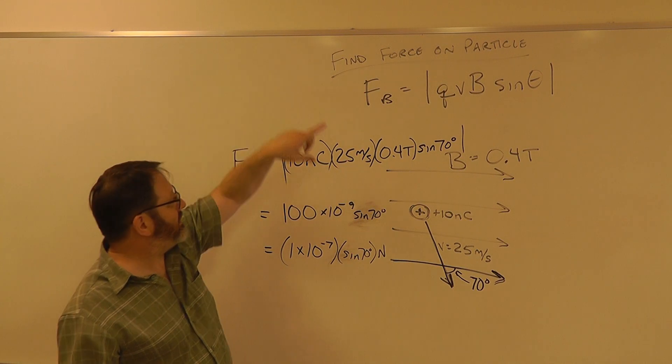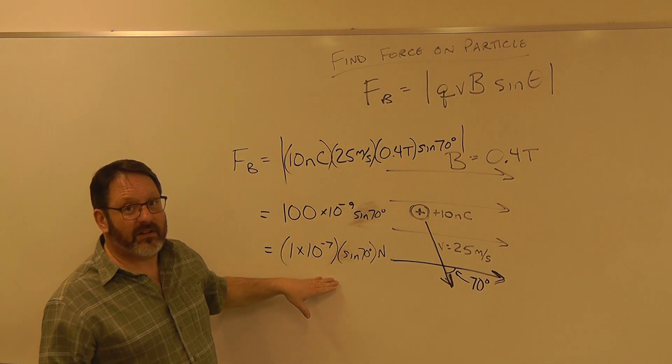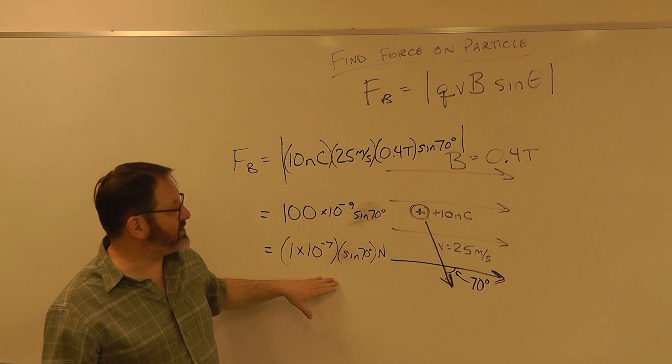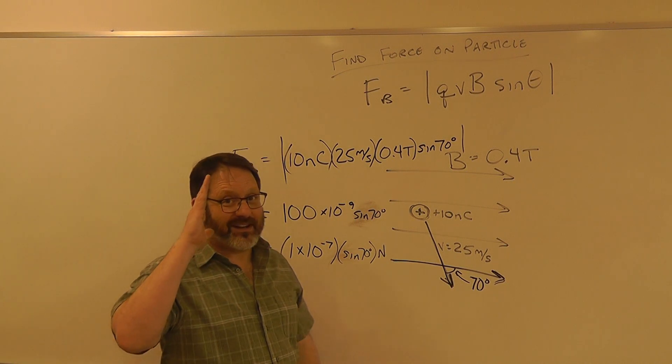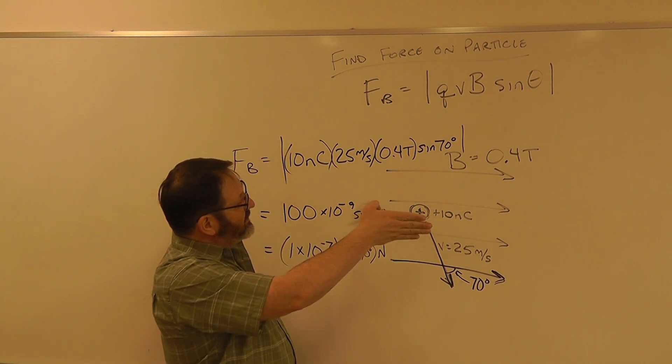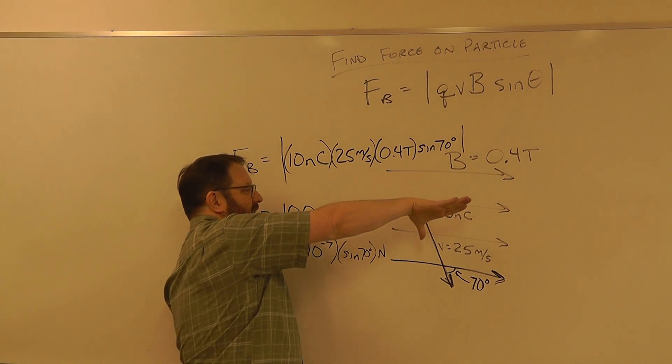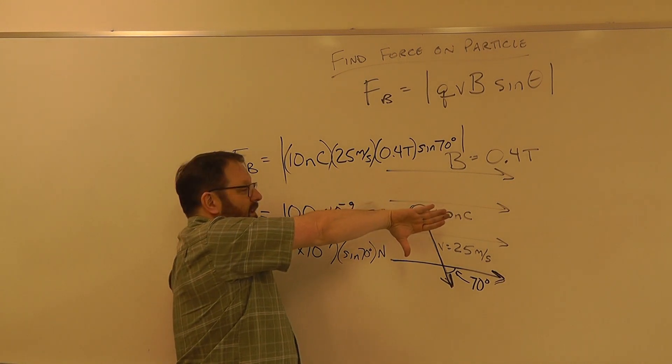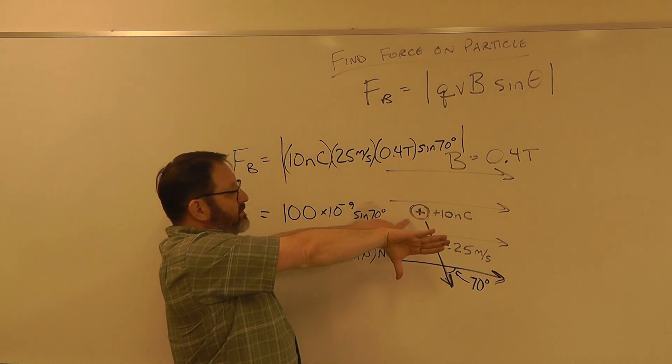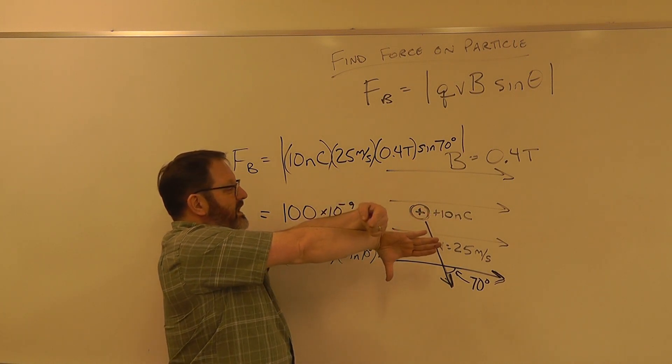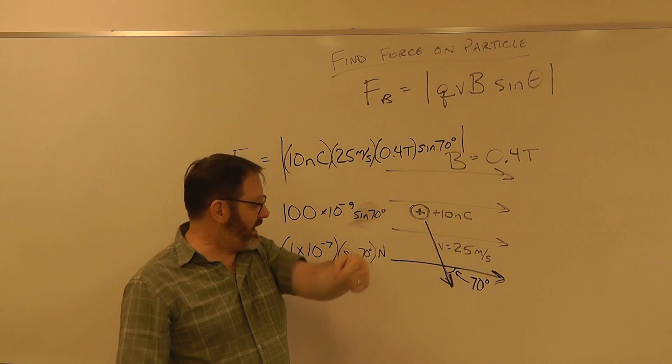Then you also need to include direction. The direction is from the right-hand rule, so fingers in the direction of the B field, thumb in the direction of velocity, so that's down this way. It's a positive charge, so the force comes out of my palm, so out of the board.